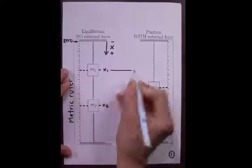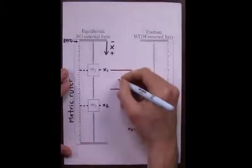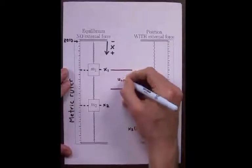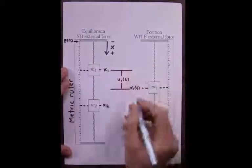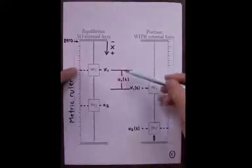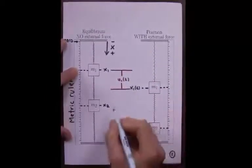which again is the difference between equilibrium and the position at any time t. We can do the same thing for the second mass. We measure the distance between equilibrium and any position at time t.